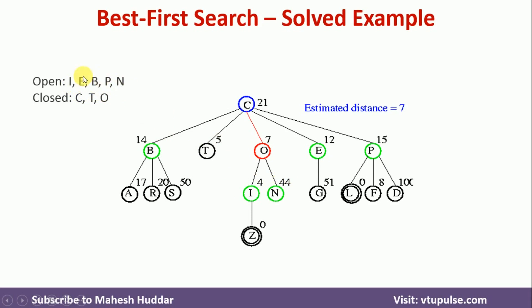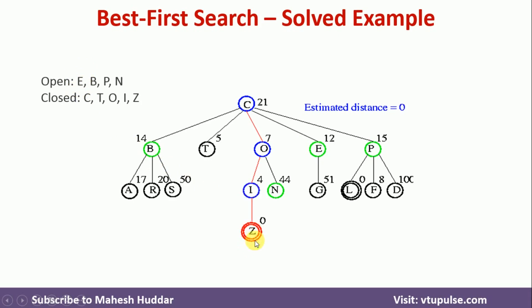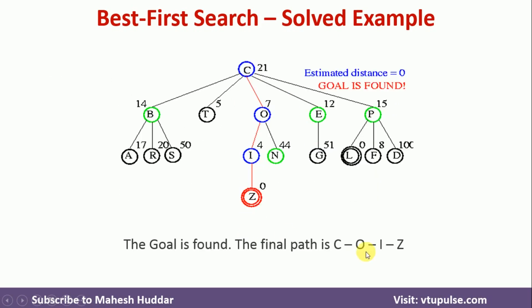Looking at open, I has the minimum estimated distance, so I move it from open to closed and examine I. I has only one successor, Z. I put Z into open — its estimated distance is zero, so Z comes and sits at the first place. Now I examine the next node from open, which is Z. Once I examine Z, it is a goal node. Because it is a goal node, we can say the goal is reached and we stop the algorithm. The final path is C to O, O to I, I to Z.